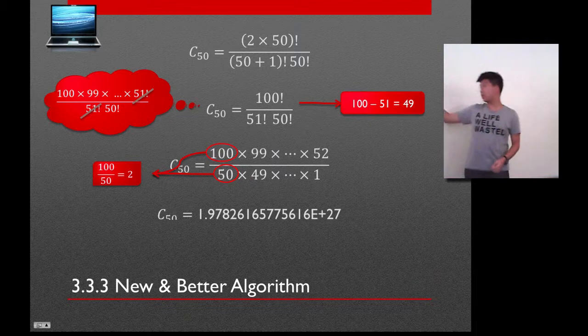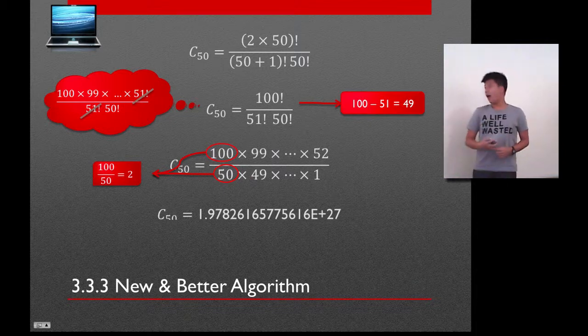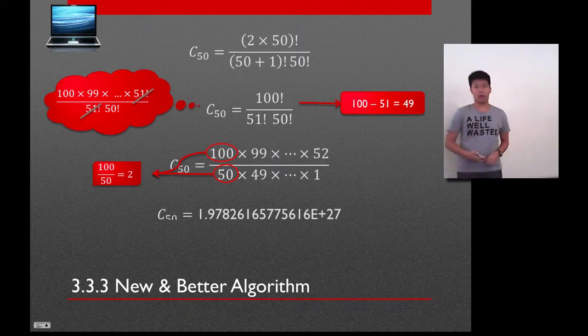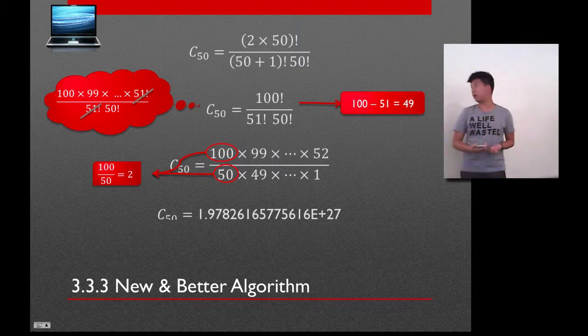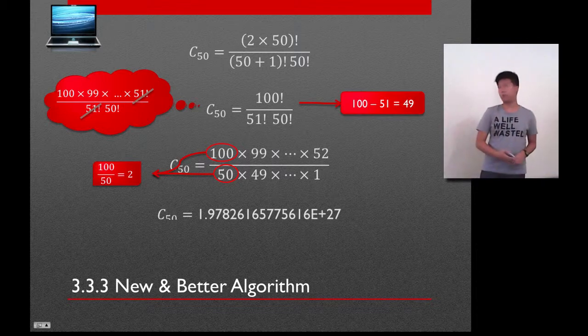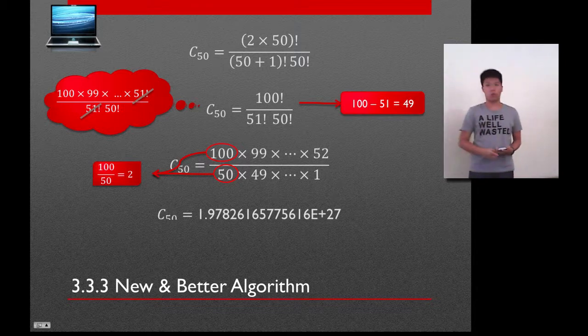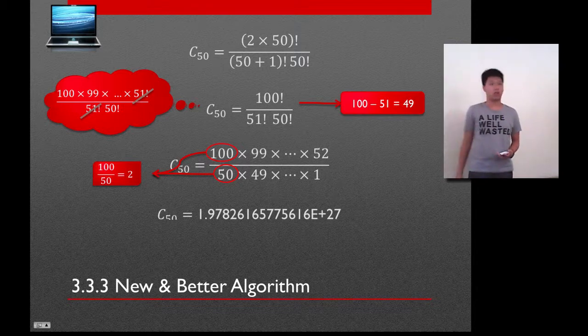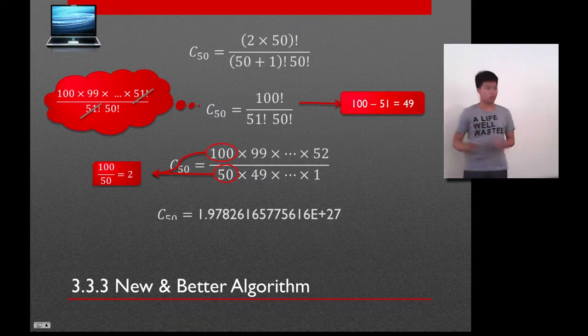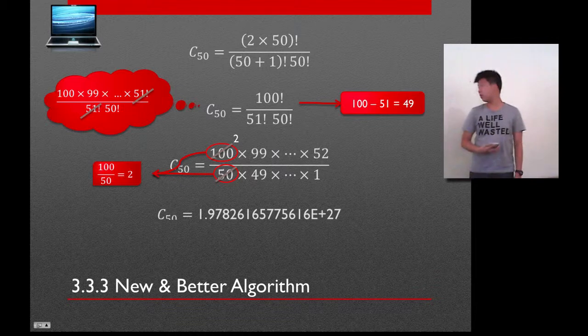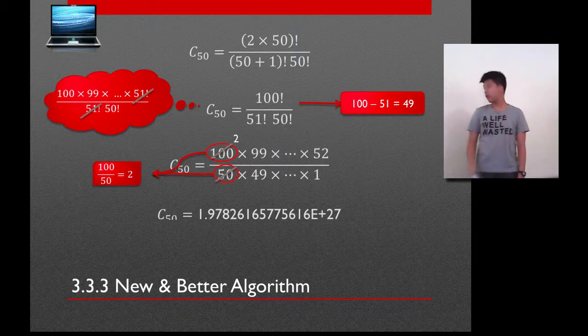So, moving on. When we get this, the program gets this. It will try to divide the numbers one by one, which results in 2. We try to divide the first number 100 with the first number below 50. And then when we get 2, the program will try to divide that 2 with 49, 48, and so on until it reaches 1. After that, it will take the second number, 99, and then do the same process again. This results in 1.97 exponential 27.